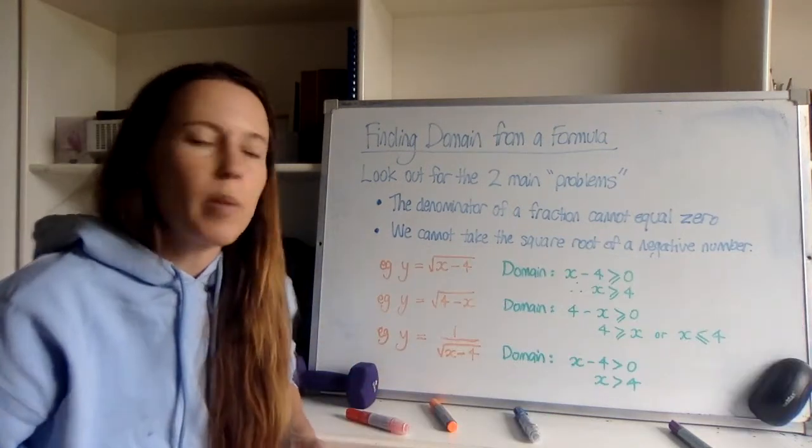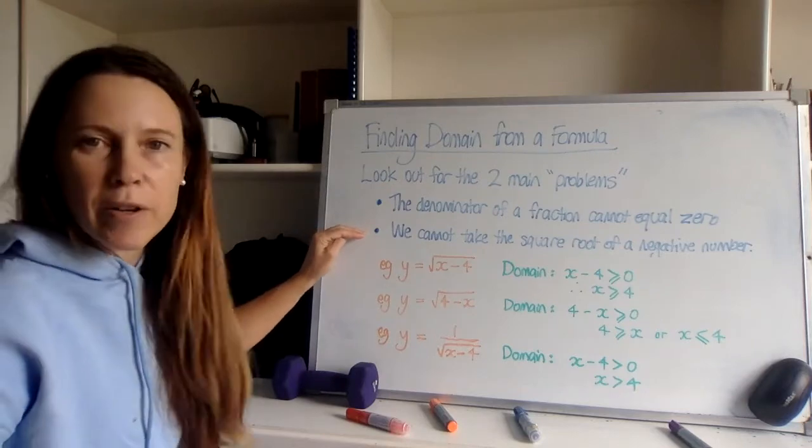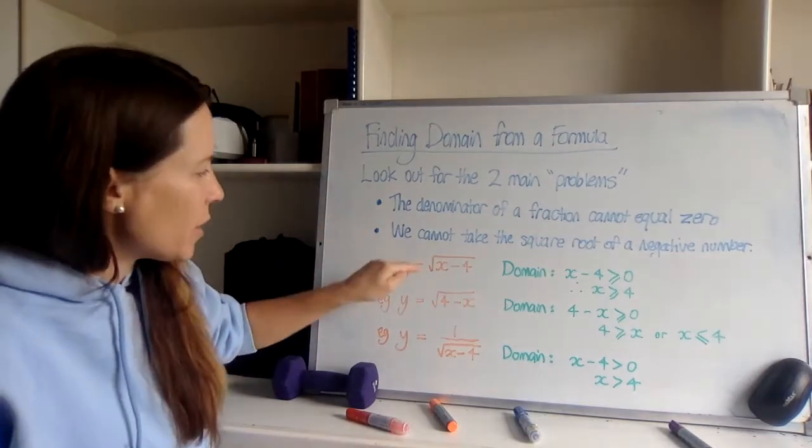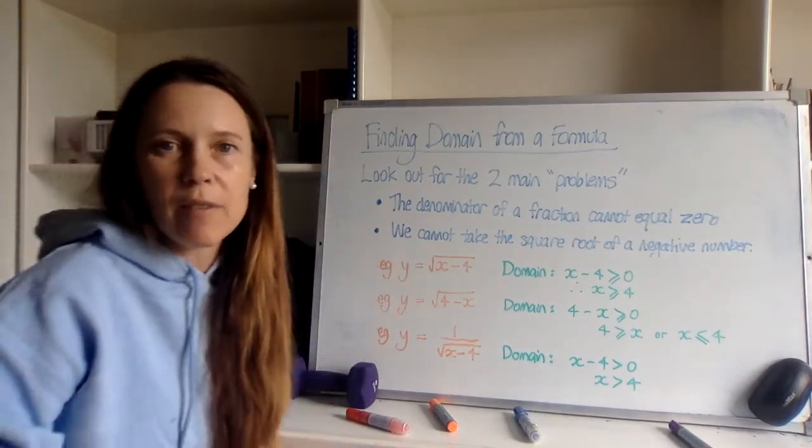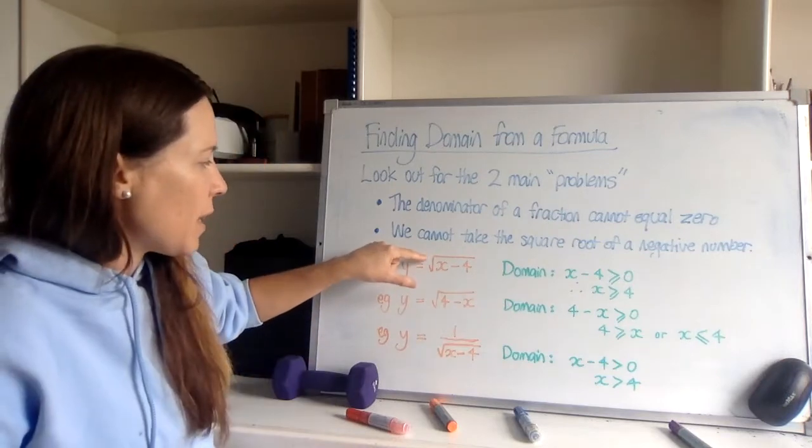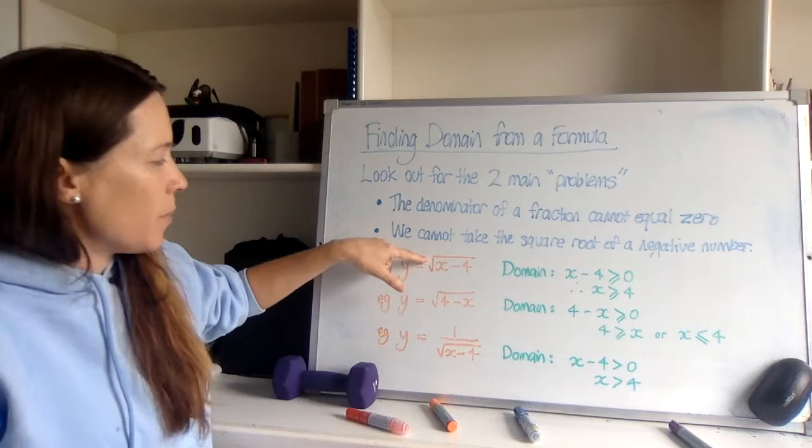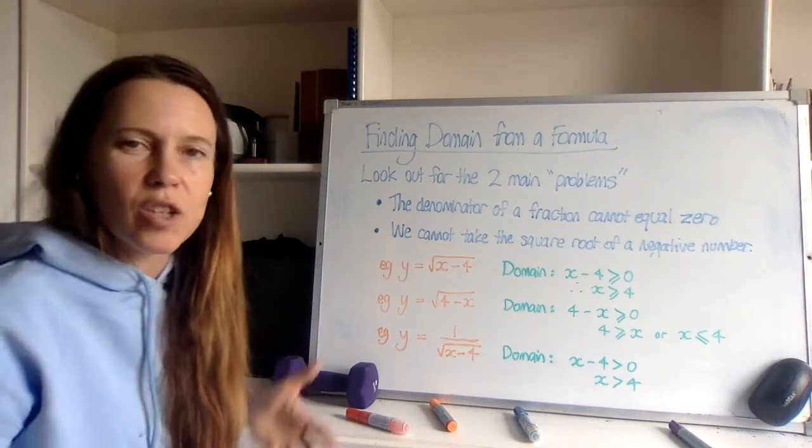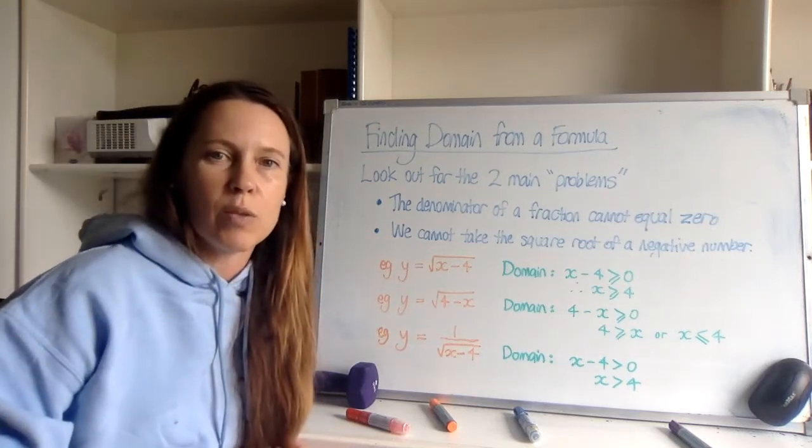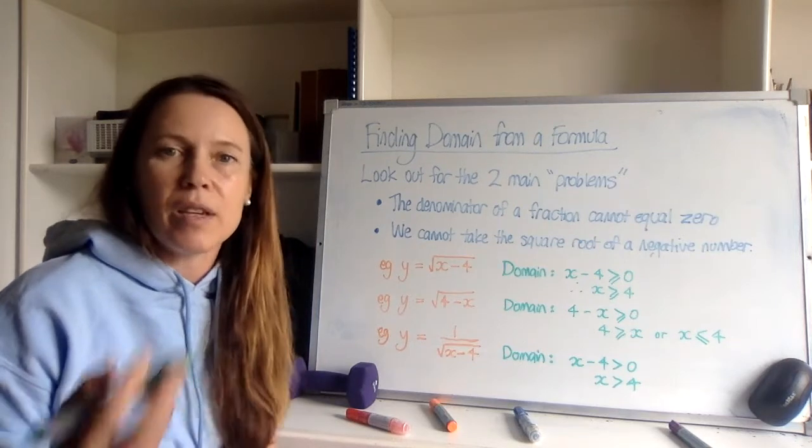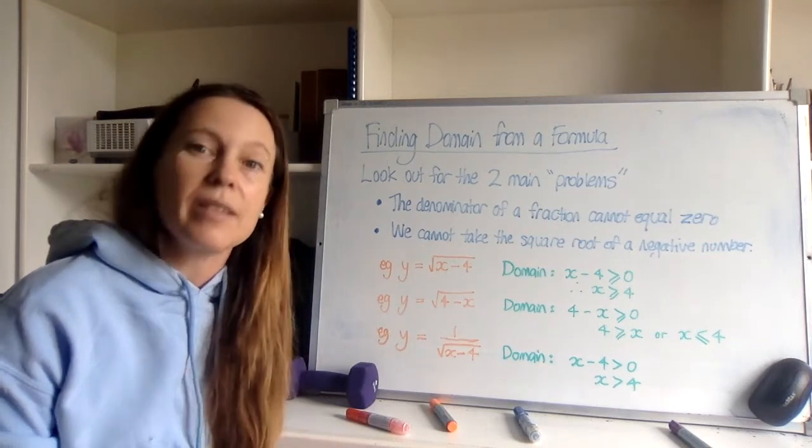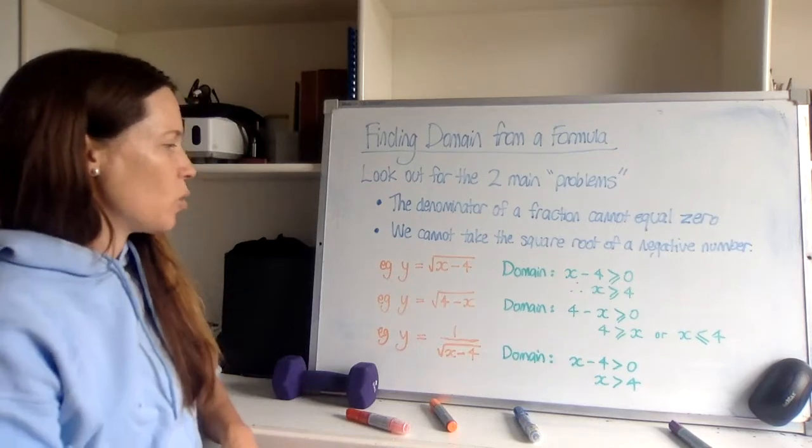Now our other potential problem was we can't take the square root of a negative number. So anytime you see a square root bracket you need to look out for this. This also would apply if you had a fourth root or a sixth root or anything with an even number here. A cube root wouldn't create the same problem because we can take the cube root of a negative number. Think of what (-2)³ is, it's -8. So those ones do work.